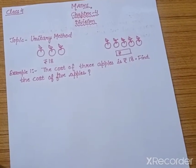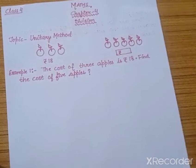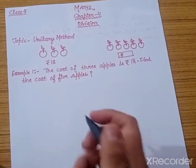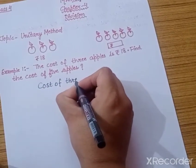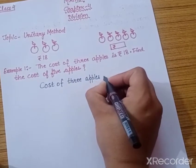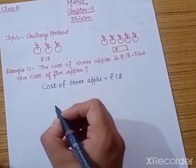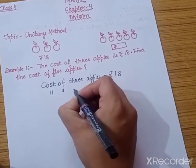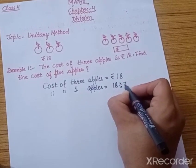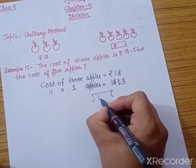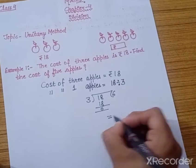They have given us the cost of three apples. With the help of that cost, we will find the cost of one apple — that is, the cost of one unit. How will we find it? By dividing. The cost of three apples equals rupees 18. So the cost of one apple equals 18 divided by 3. Three 6's are 18, so the cost of one apple is rupees 6.